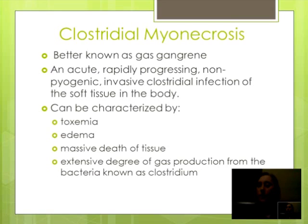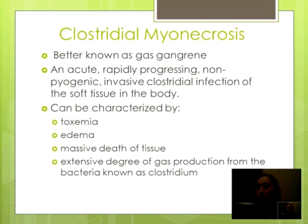Clostridial myonecrosis is the scientific name for gas gangrene. It is an acute, rapidly progressing, non-pyogenic invasive clostridial infection of the soft tissue in the body. It can be characterized by toxemia, edema, massive death of tissue, and extensive degree of gas production from the bacteria known as clostridium.